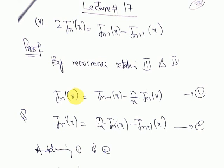To prove the fifth recurrence relation, we will use the third and fourth recurrence relations. The third recurrence relation is: J'n(x) = J(n-1)(x) - (n/x)·Jn(x) — this is equation number one. The fourth recurrence relation is: J'n(x) = (n/x)·Jn(x) - J(n+1)(x) — this is equation number two.